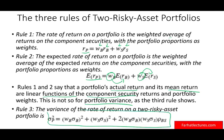Rules one and two show that portfolio actual return and its mean are linear functions of the component securities. But this is not true when computing portfolio variance. The portfolio variance does not simply scale with the weights — what matters is the nature of the relationship between the two assets, not just the weights. If the interaction is negative — a negative covariance — that's good; it means the assets don't work together, and when some do well, others don't.